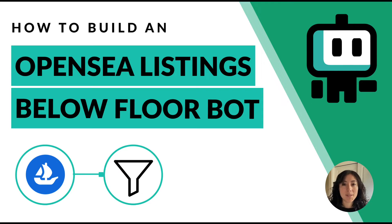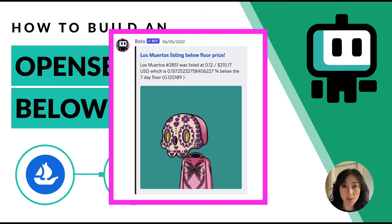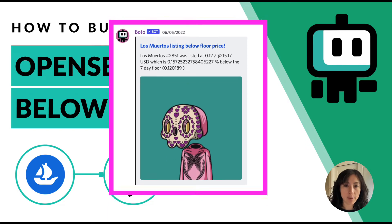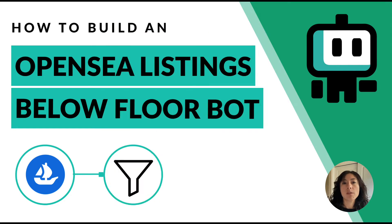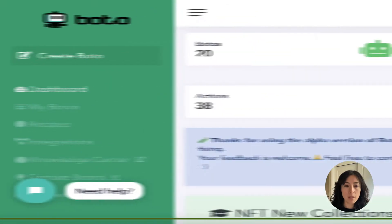Hello everybody, I'm Crystal, head of community at Boto. Today I'm going to go through how to set up an automation that will alert you every time an NFT from a certain collection is listed on OpenSea under the sales floor for that collection. We'll start by taking a quick look at the recipe, but primarily in this video we're going to reconstruct it so you can understand how it all comes together and customize it as you wish.